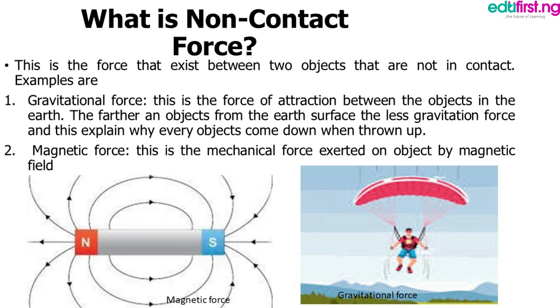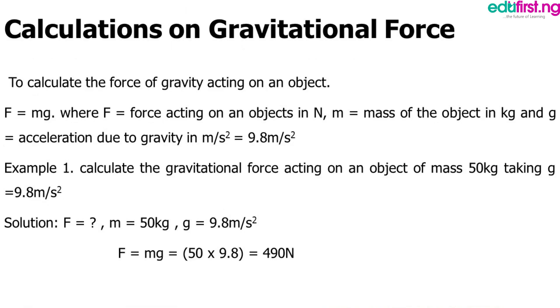Let's do some calculation. Calculation on gravitational force. To calculate the force of gravity acting on an object, here is the mathematical expression: F equals mg. Where F is force acting on an object, which is measured in Newton. We have m, which is equal to mass of the object in kilogram. And we have g, which is equal to acceleration due to gravity in meter per second squared, and is usually 9.8 meter per second squared.